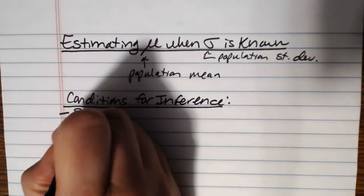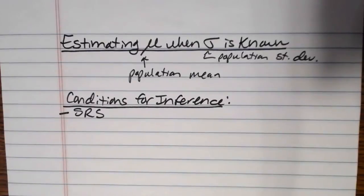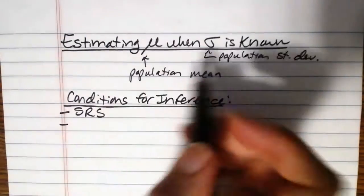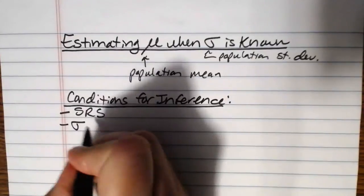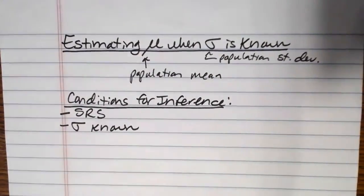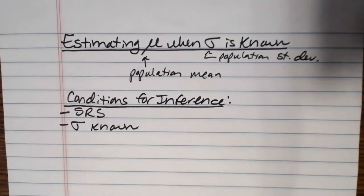A couple of things that have to be satisfied in order to estimate mu when sigma is known. First of all, we need our data to be obtained via a simple random sample. If there's bias in the sample, this method does not hold. So we need a valid sampling method. Specifically, we need a simple random sample. Additionally, to use the method we're going to talk about here, sigma has to be known.